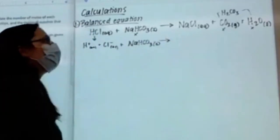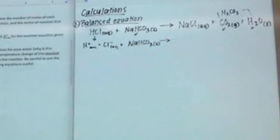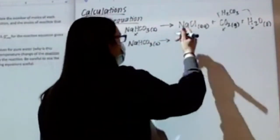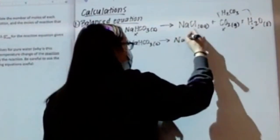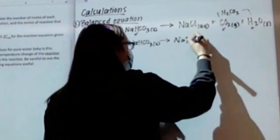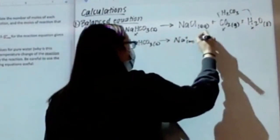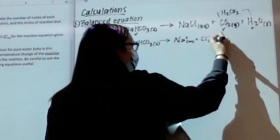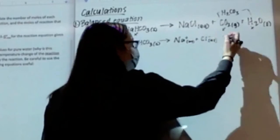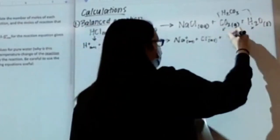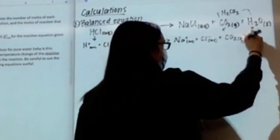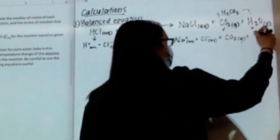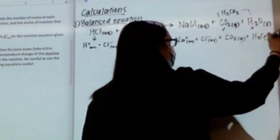Will NaCl break apart? Yes — it's a soluble salt. So on the products side we have Na+, Cl-, and then CO2 gas stays together and H2O liquid stays together.